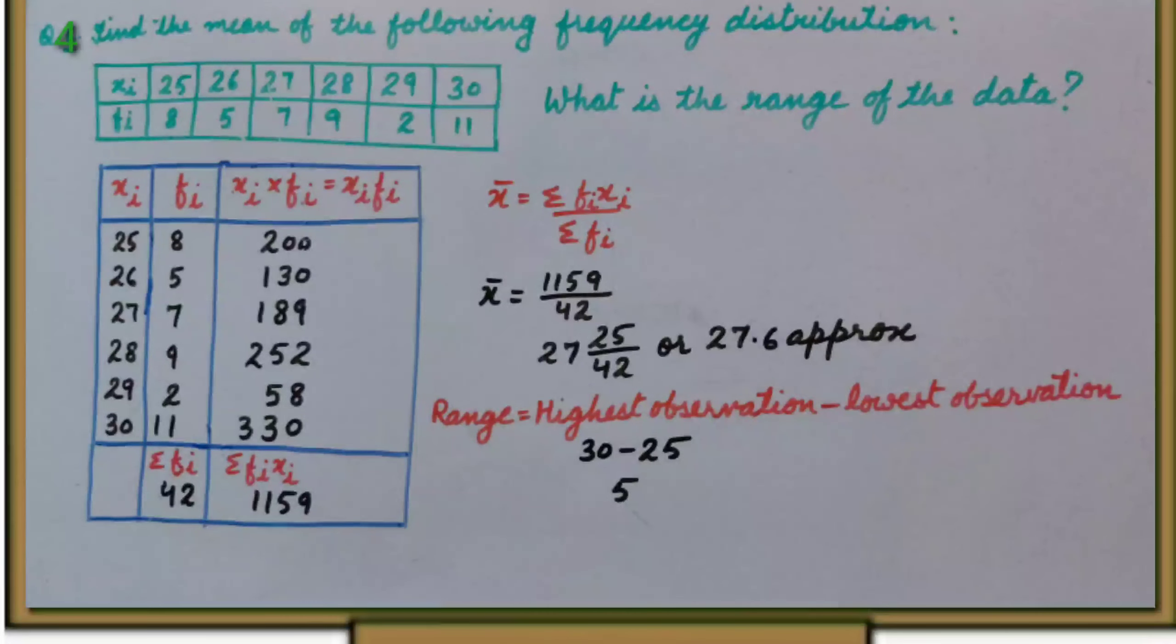For this, we have to make a table where we will write xi and fi. In the third column, we will multiply xi and fi and get xi fi. That is 25 multiplied by 8, 200, 26 multiplied by 5, 130 and so on.